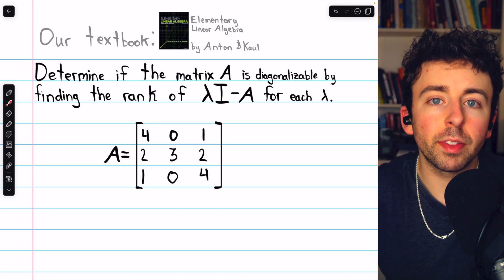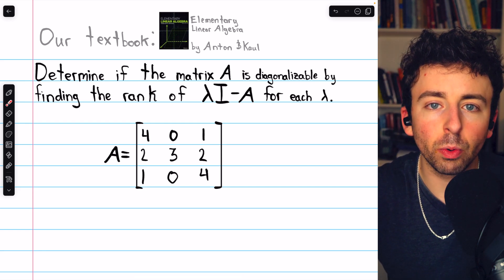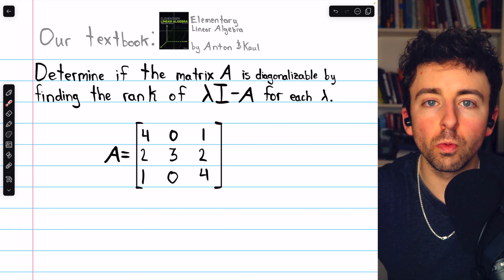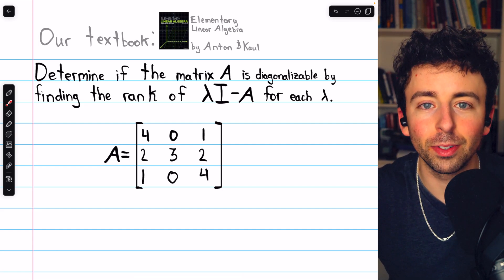From there, we can determine if there are sufficiently many eigenvectors to diagonalize the matrix. Let's see how this works, and I'll leave links in the description to relevant topics if you find yourself needing some review on eigenvalues and all that stuff.